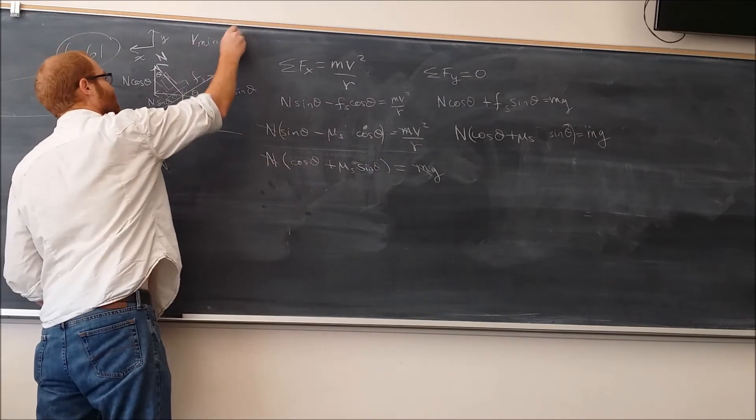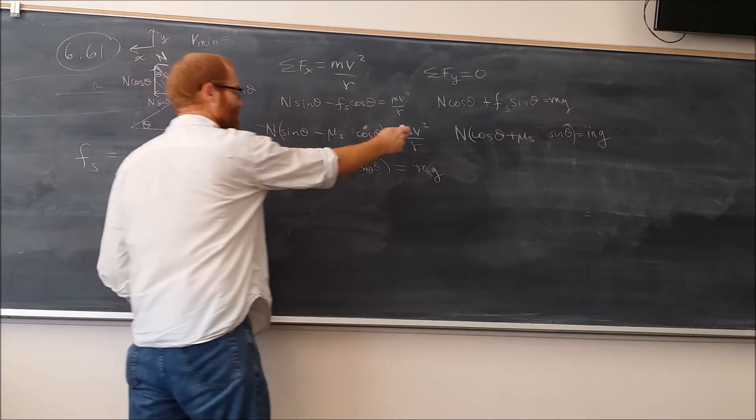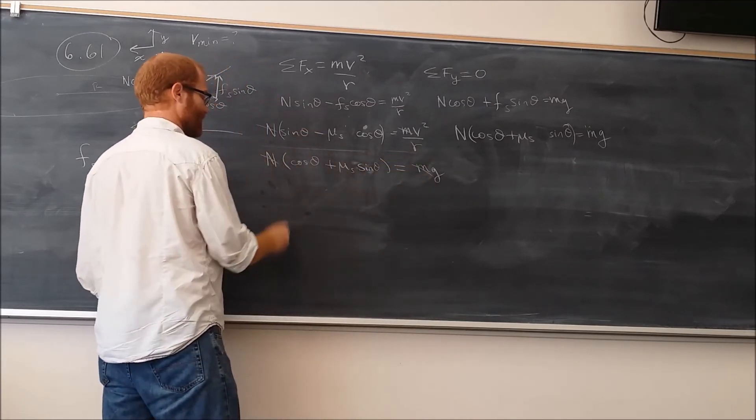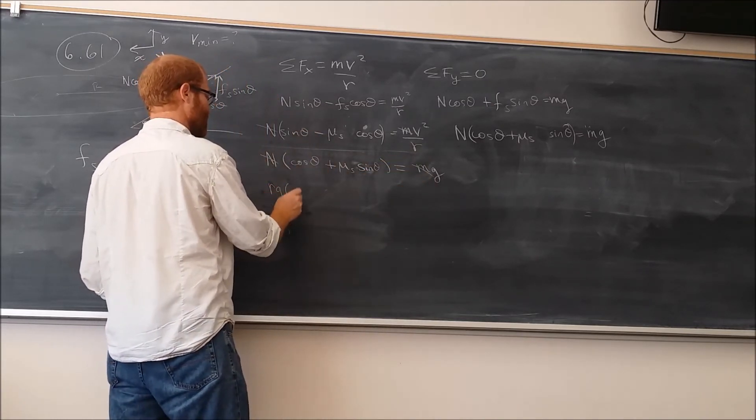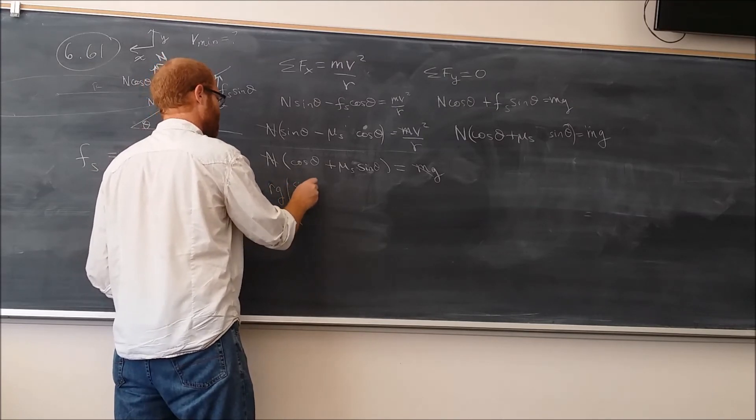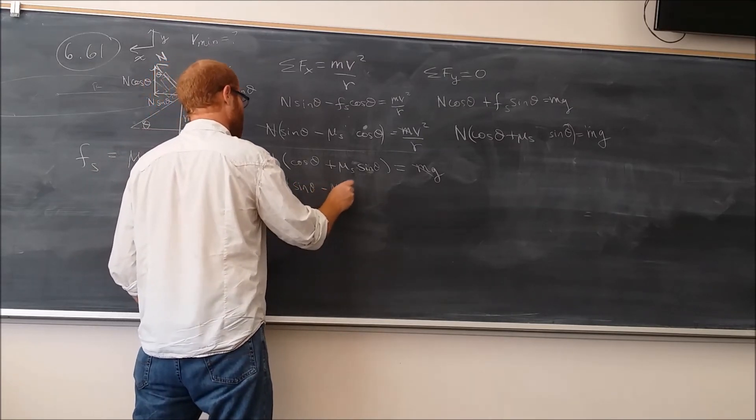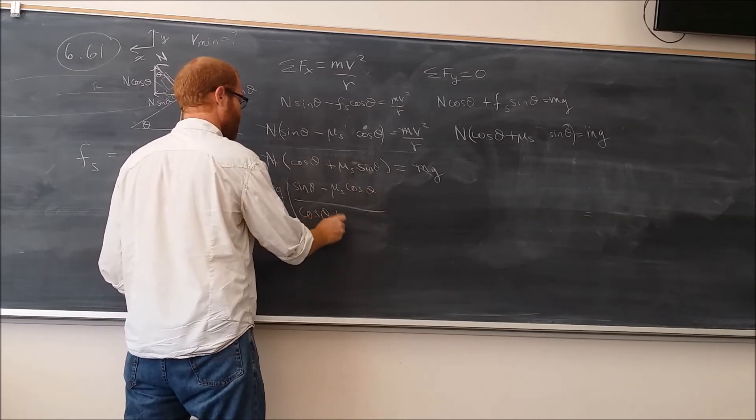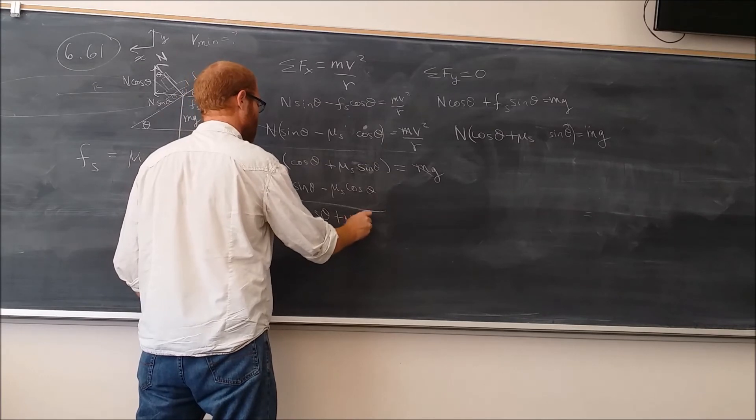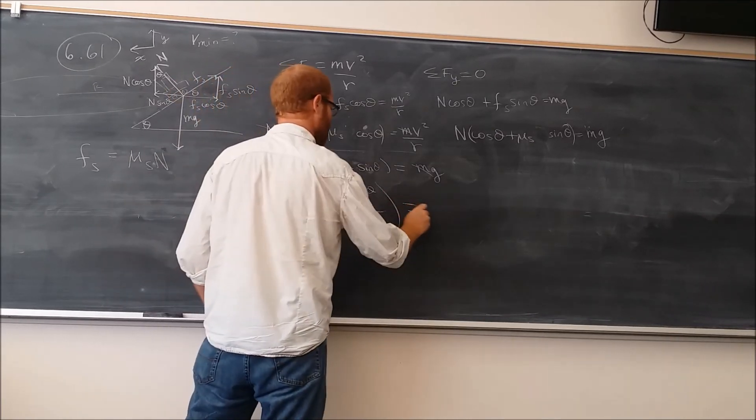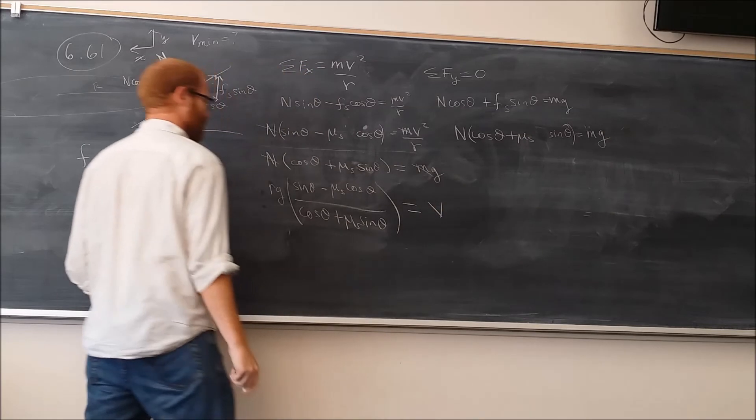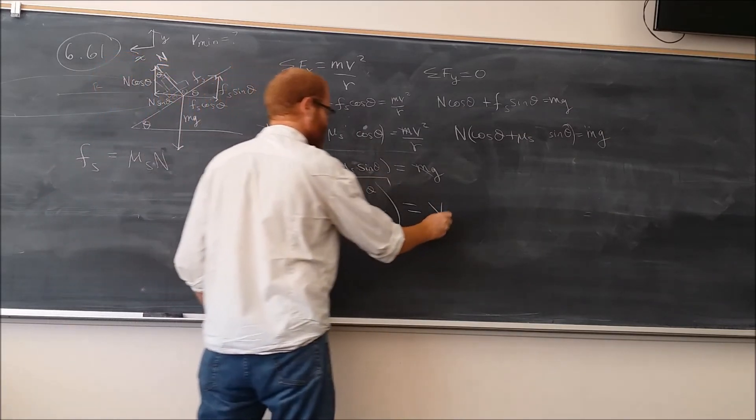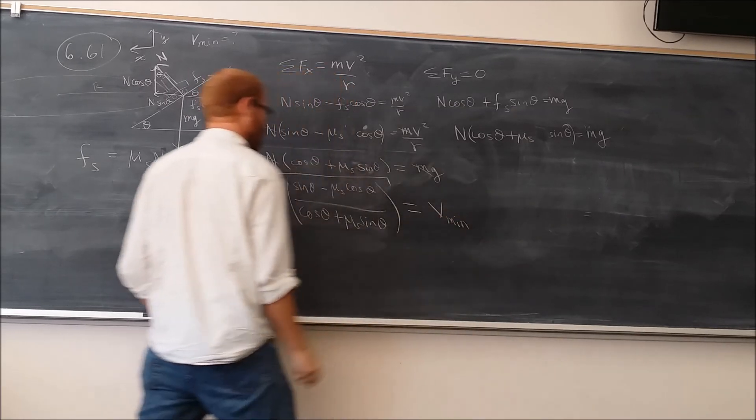So, since we're doing V min in this case, that's what this one is going to become. So, we'll get this. I'm going to move the R and the G to the left side. So, we're going to get R G times this big fraction here, sine theta minus mu s cosine theta over cosine theta plus mu s sine theta. And all of this will be square root. This will give us our V min. That's the answer.